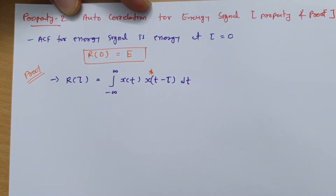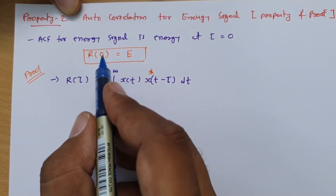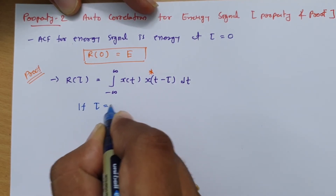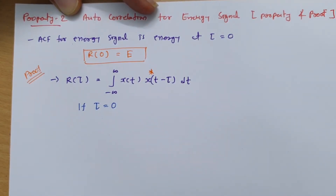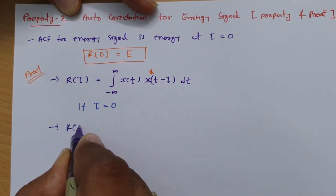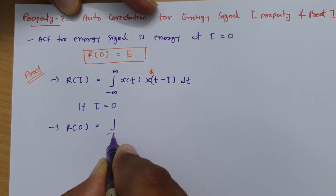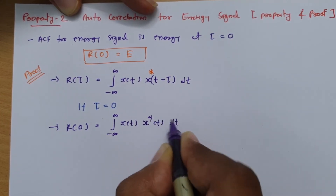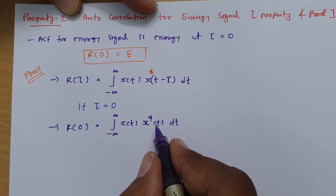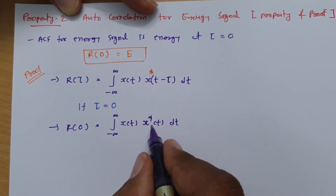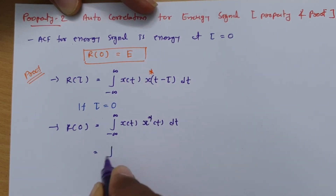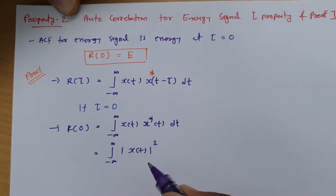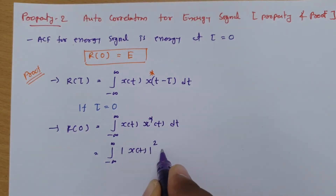Now here, as I have told you, this is the autocorrelation function where we need to calculate r(0), and that has to be equal to energy. If you consider tau equals 0 in this equation, then r(0) becomes the integration of x(t) into x*(t) dt, since t minus 0 is just t. So x(t) into x*(t) means the modulus of x(t) whole squared.